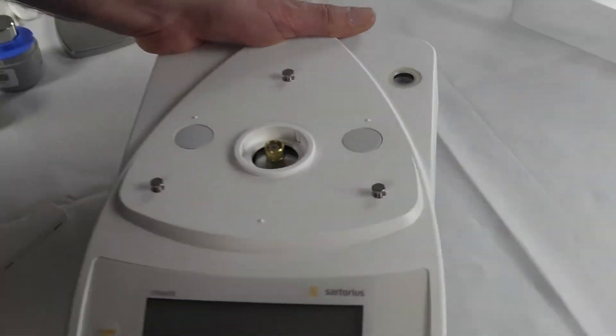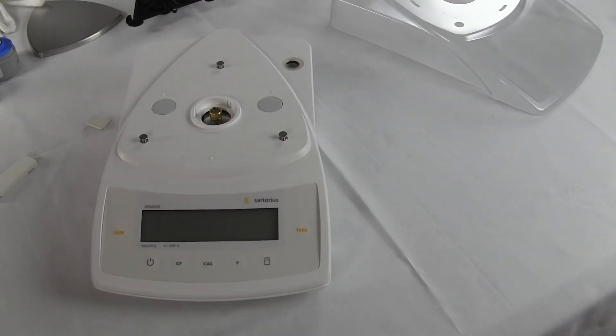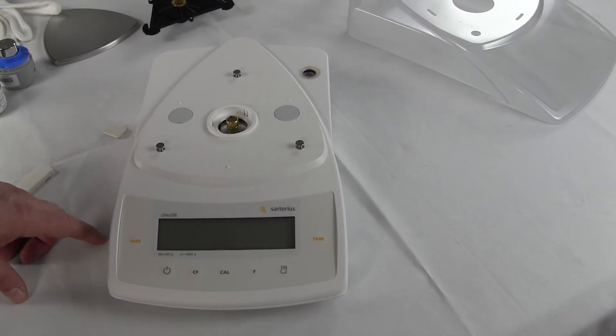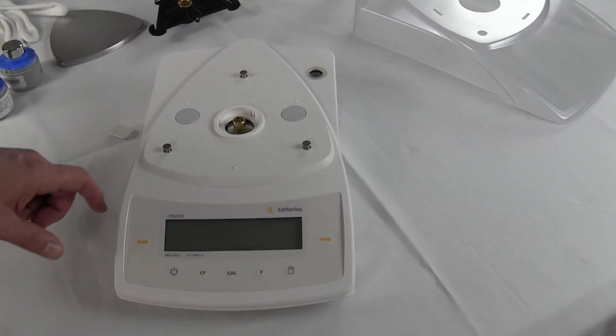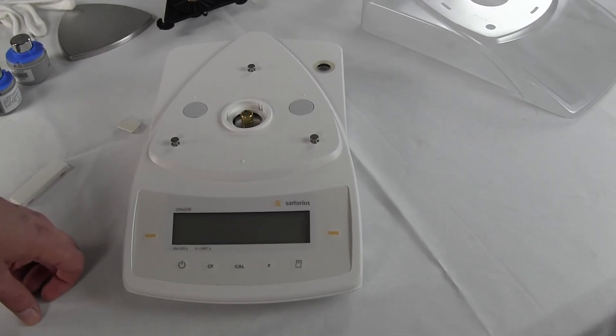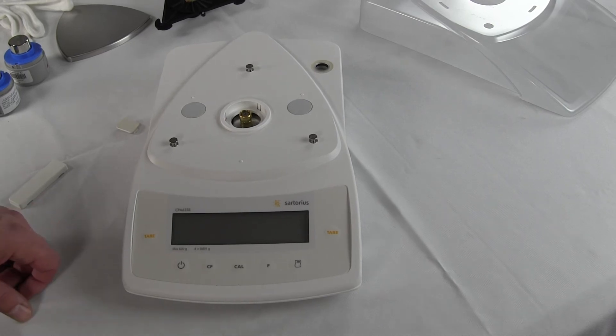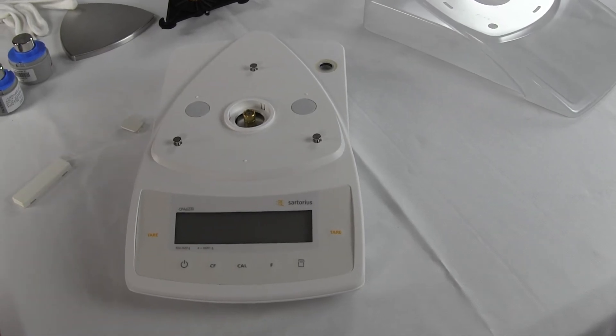This is the Sartorius CPA 623S. This is 620 grams by 1 milligram. This is Precision Weighing Balances. You can visit us at either balances.com or scaleman.com. We're an authorized Sartorius dealer. If you have any questions, give us a call.